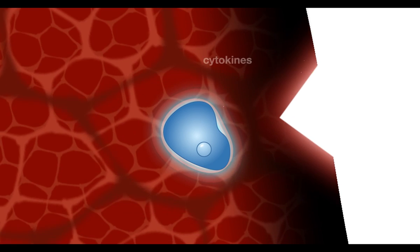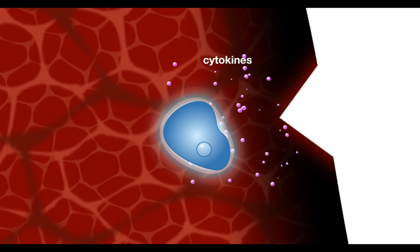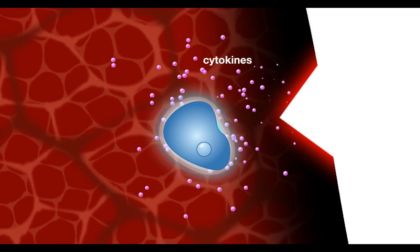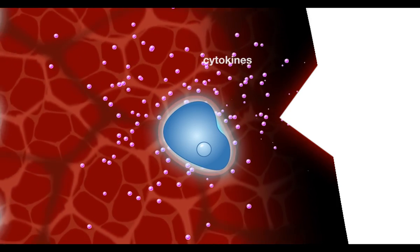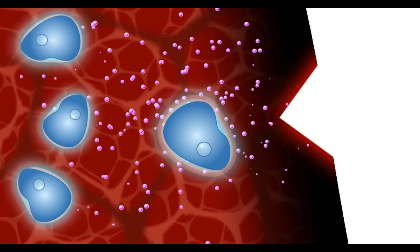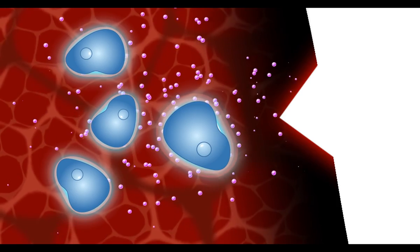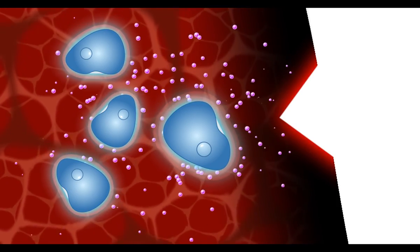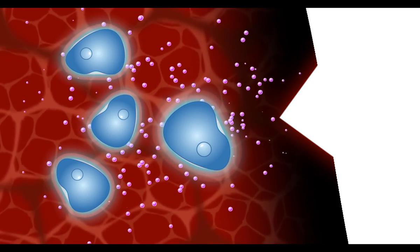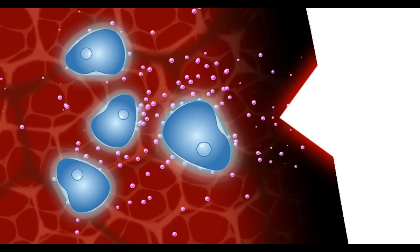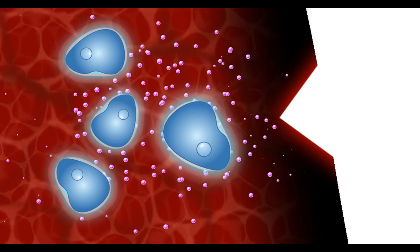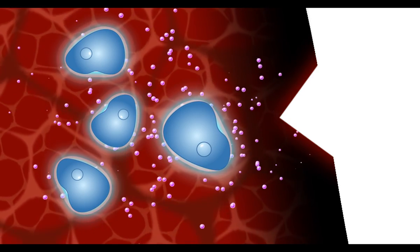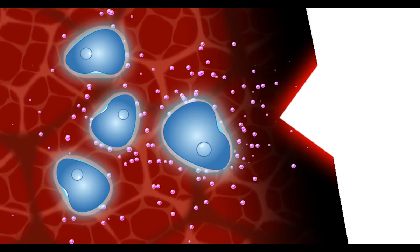Inflammation at the site also causes the release of small proteins called cytokines that help regulate the immune response and attract additional macrophages from the bloodstream to the site. This first and immediate response is known as innate immunity. Although rapid, it is nonspecific, it is the same for all antigens, and the immune system does not retain any memory of the encounter with the antigen.